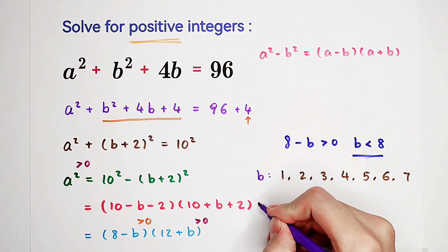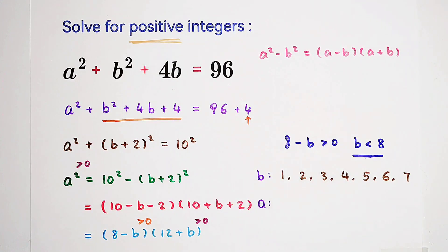And you can see, in some cases, now we have to verify these values. You can find out, only for b is equal to 4, a is 8. b is 6, a is 6.